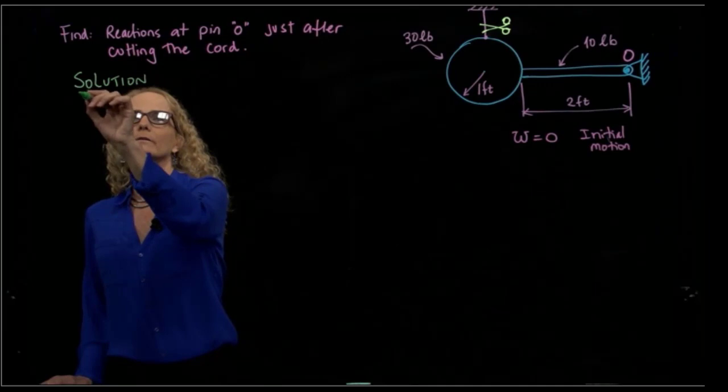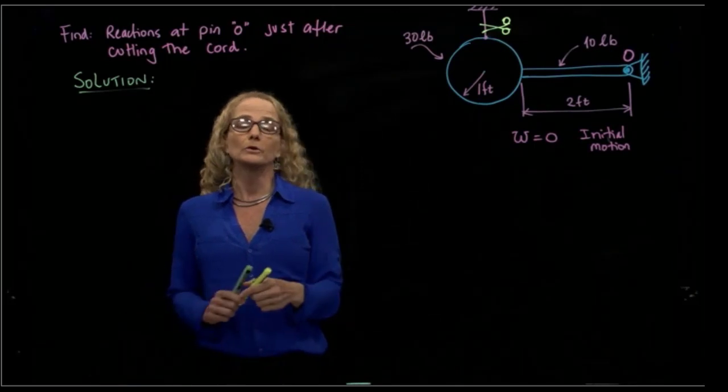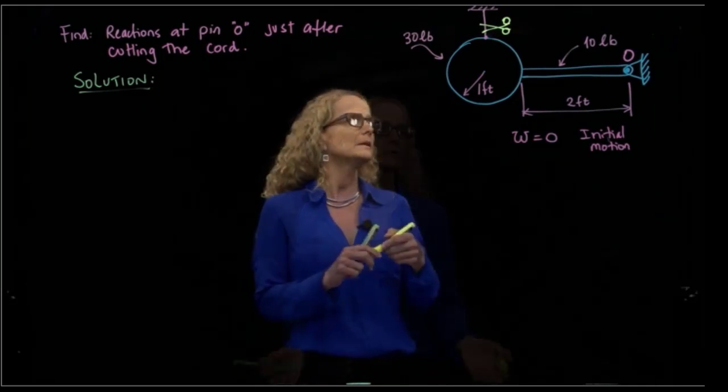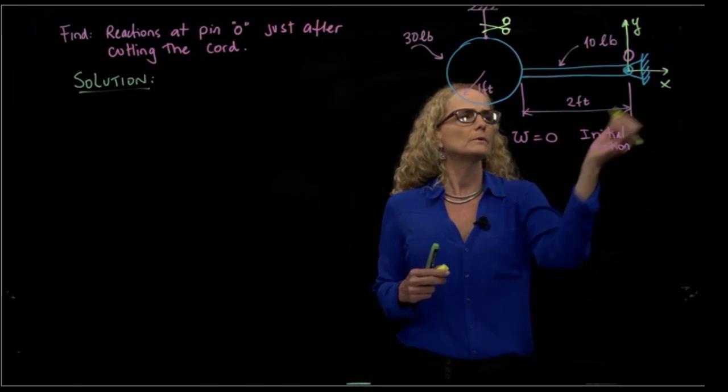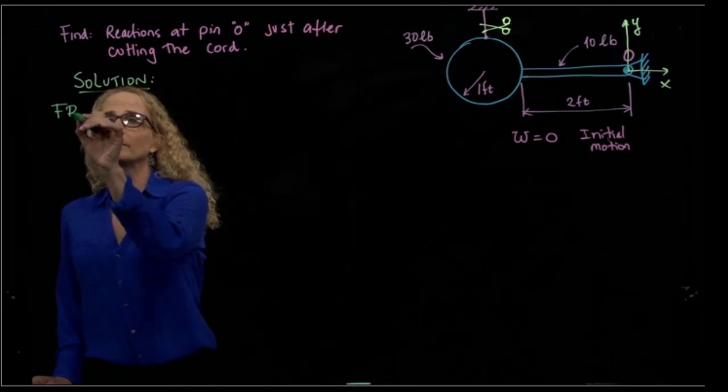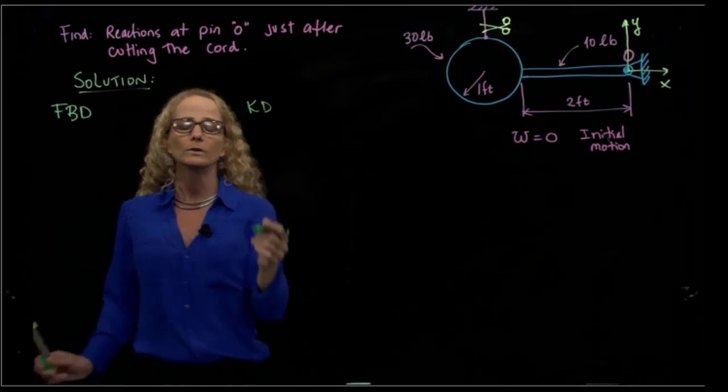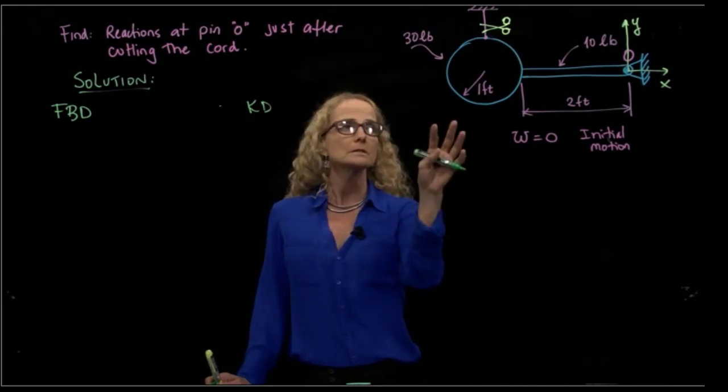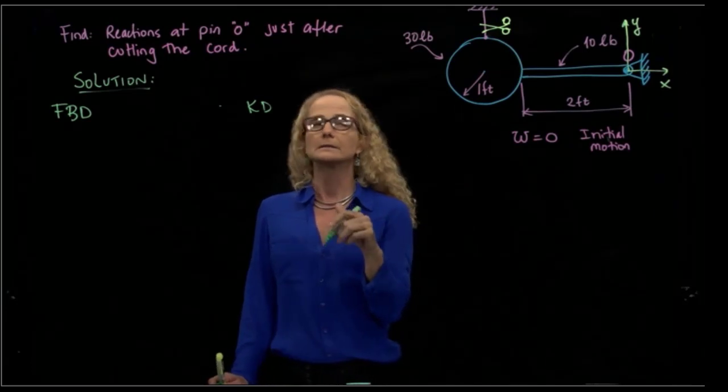For the solution, the first thing we want to do is set up our coordinate system. We could use a tangent and normal system or x and y. Let's go with the traditional x and y. We have to do our free body diagram and our kinetic diagram, and make those two equal for our equation of motion because the external forces applied to the system equal the kinetic forces generated in the system.